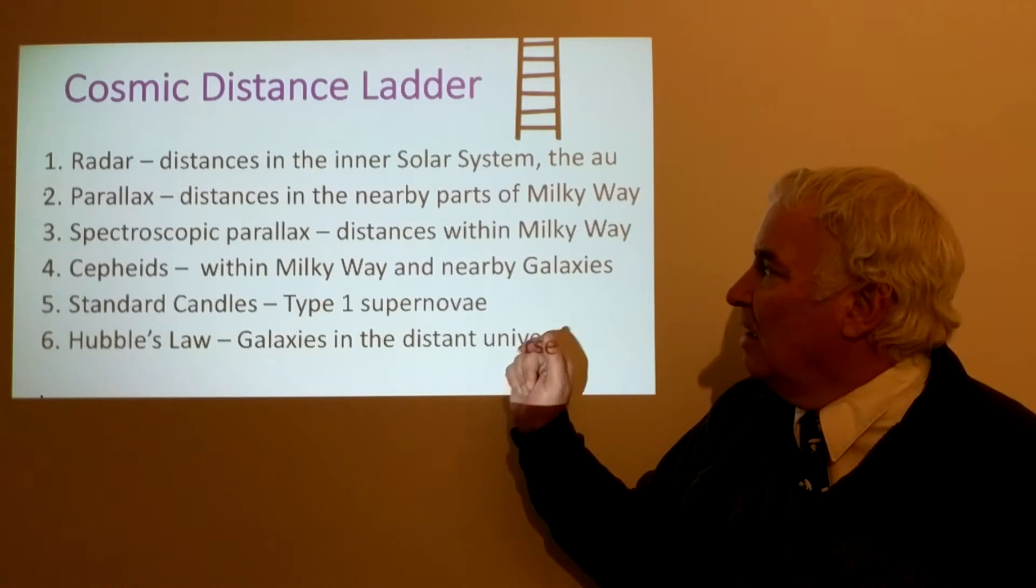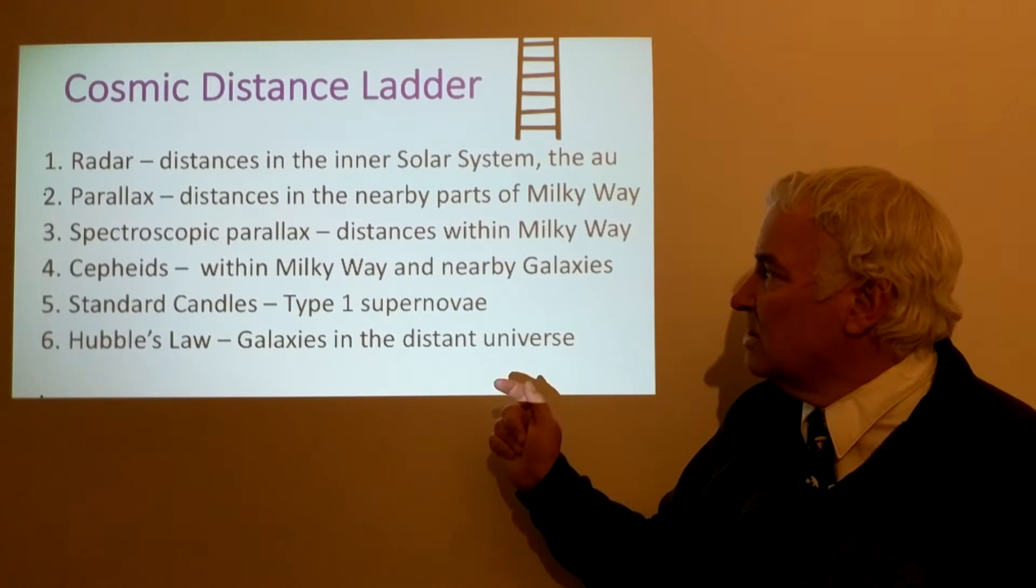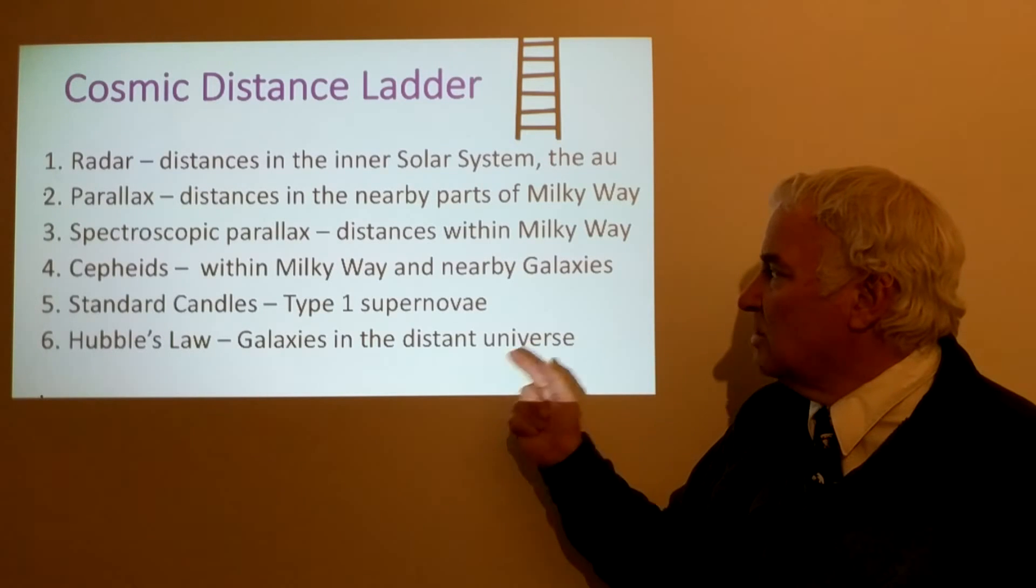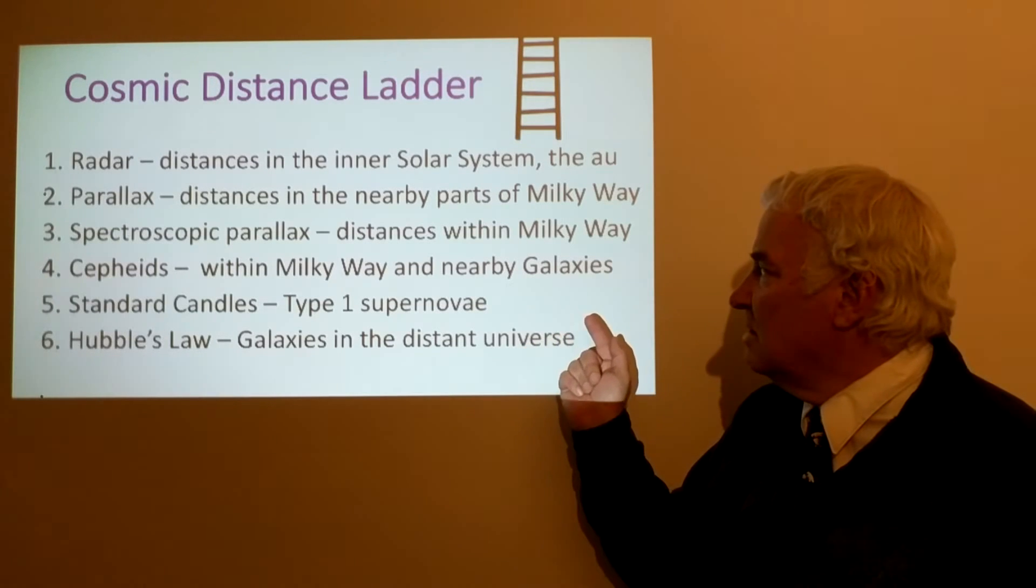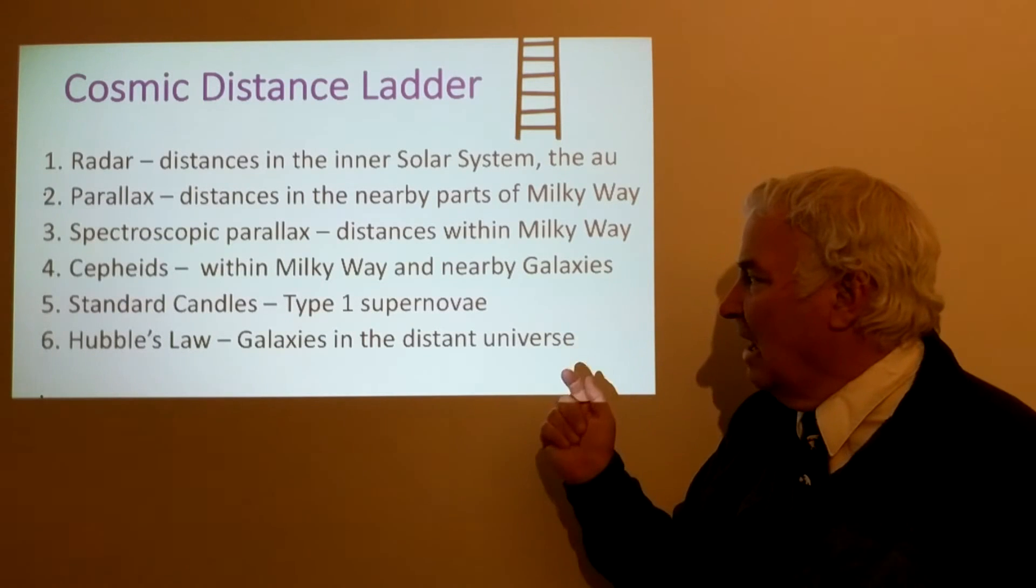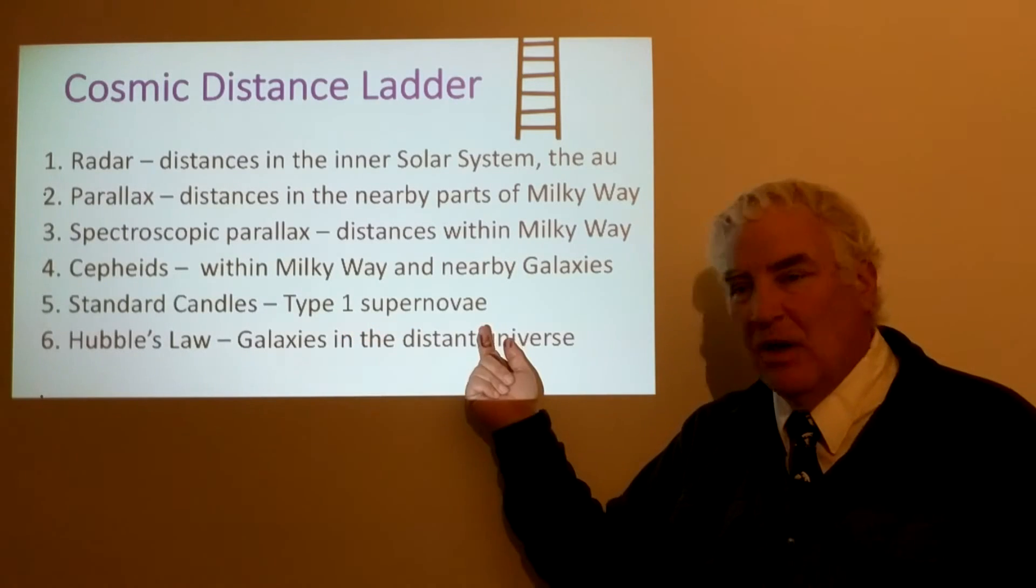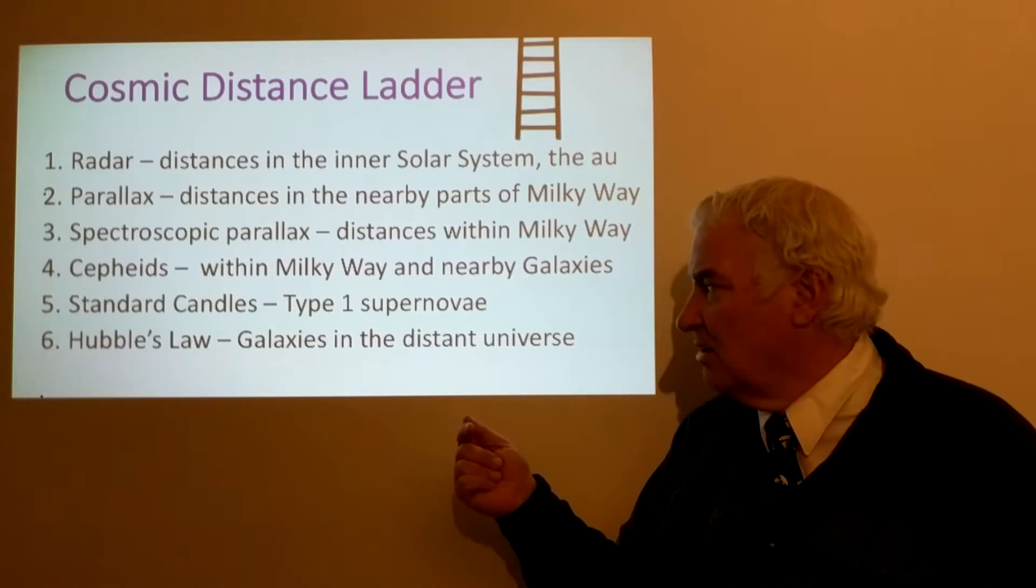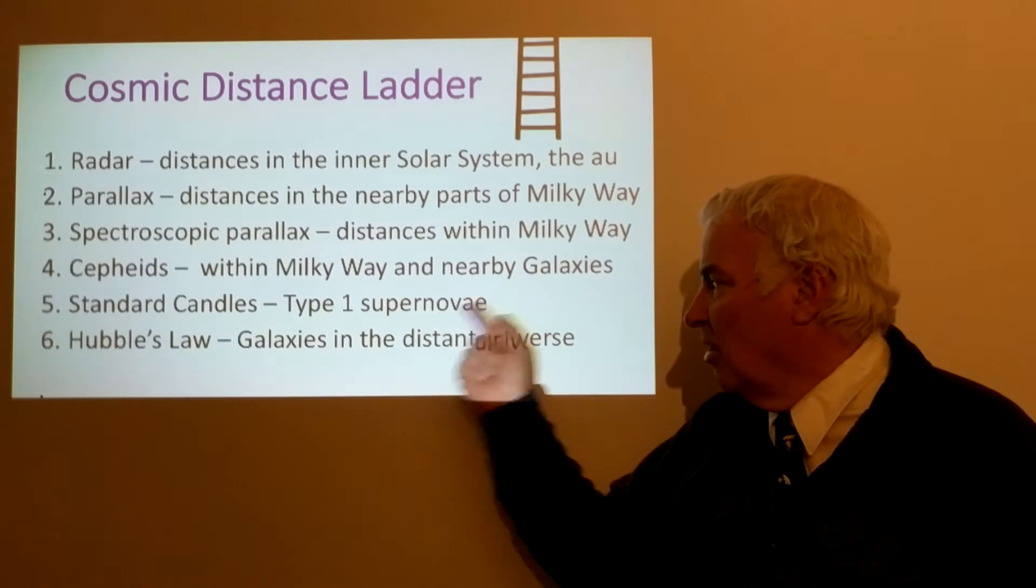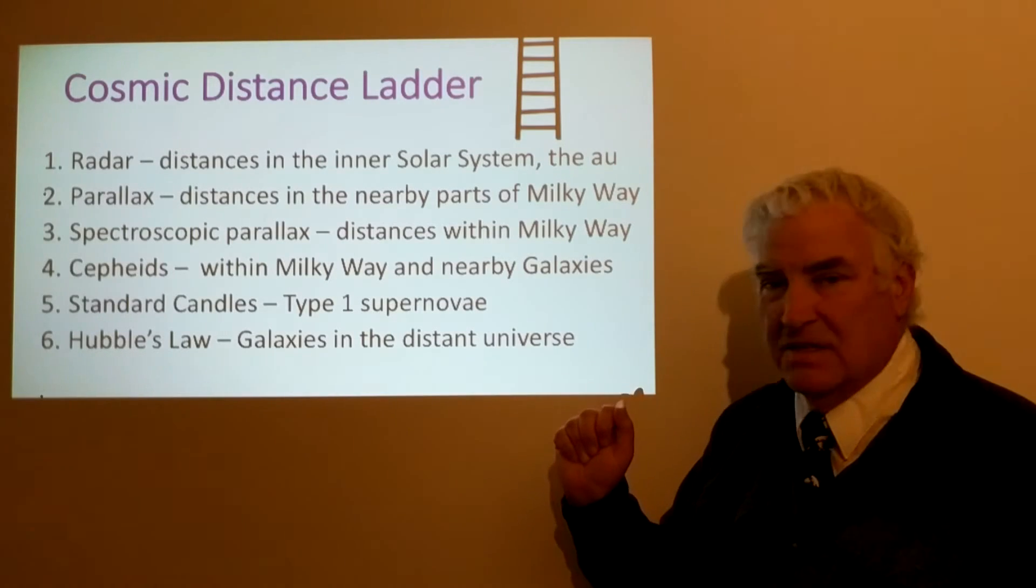So we will look at radar distances in the inner solar system, parallax distances to nearby parts of the Milky Way, spectroscopic parallax distances within the Milky Way, Cepheids within the Milky Way and nearby galaxies, and standard candles type 1a supernovae, and Hubble's law for galaxies in the distant universe.